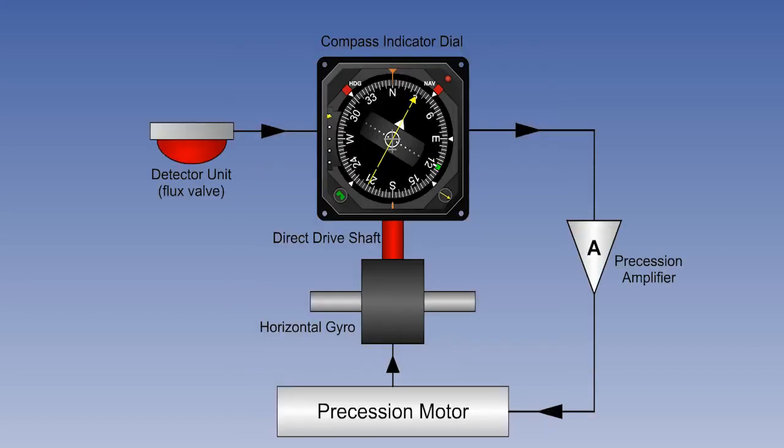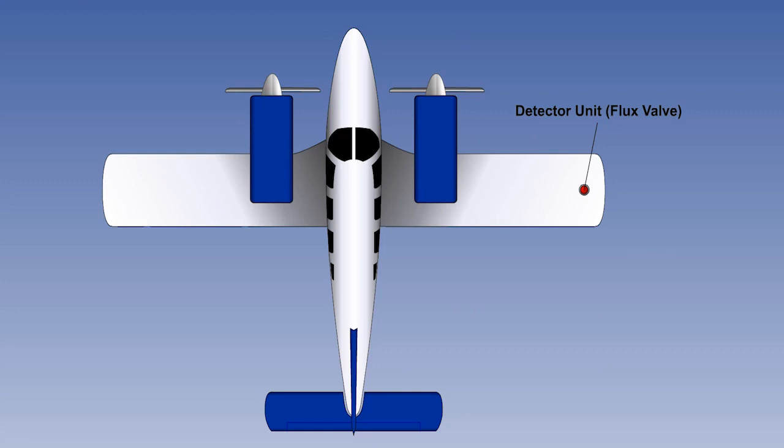The system comprises the following elements. A magnetic detector unit, also often known as a flux valve or a flux gate. Note that it is usually mounted on a wing tip or on top of the fin, and is therefore well removed from most of the sources of deviation.